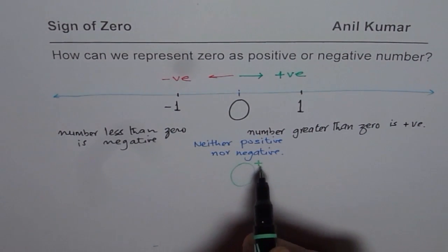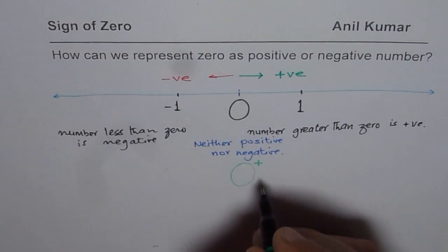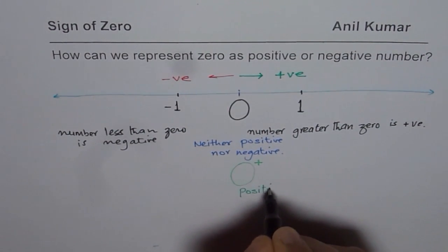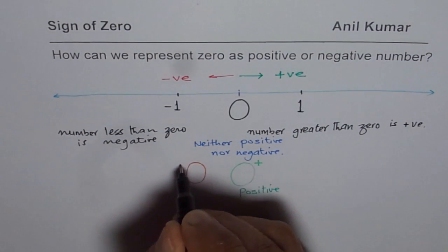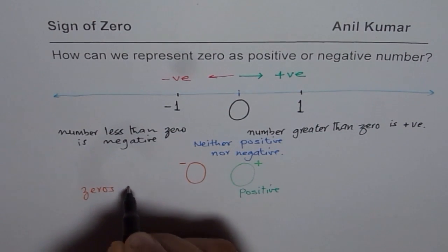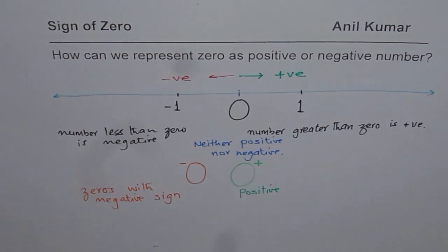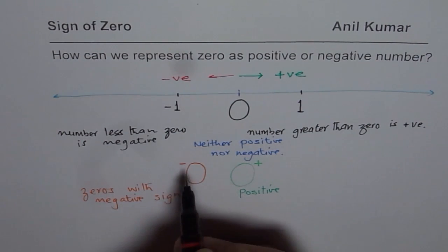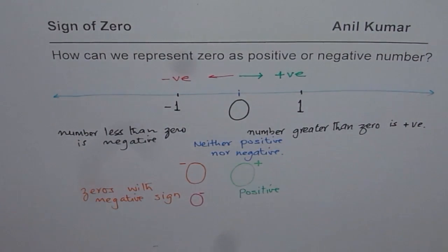If I write zero with a positive sign — zero-plus — that means anything to the right side of zero, which is treated as positive. And if I write zero with a negative sign — zero-minus — that is zero on the left side, treated as negative. Remember that we could put the negative sign either way; it doesn't really make a difference. We could use either notation.